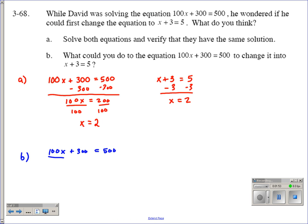That number would be 100. So if we took our equation and we divided both sides of our equation by 100, 100x divided by 100 is x, 300 divided by 100 is 3, and 500 divided by 100 equals 5. So David can divide each side of his equation by 100.